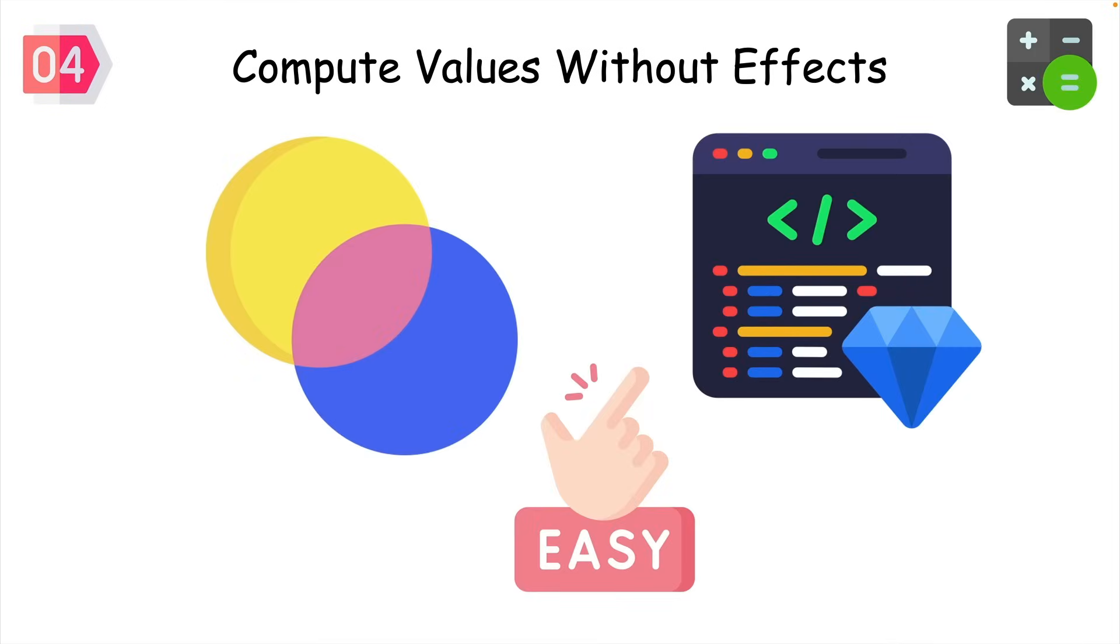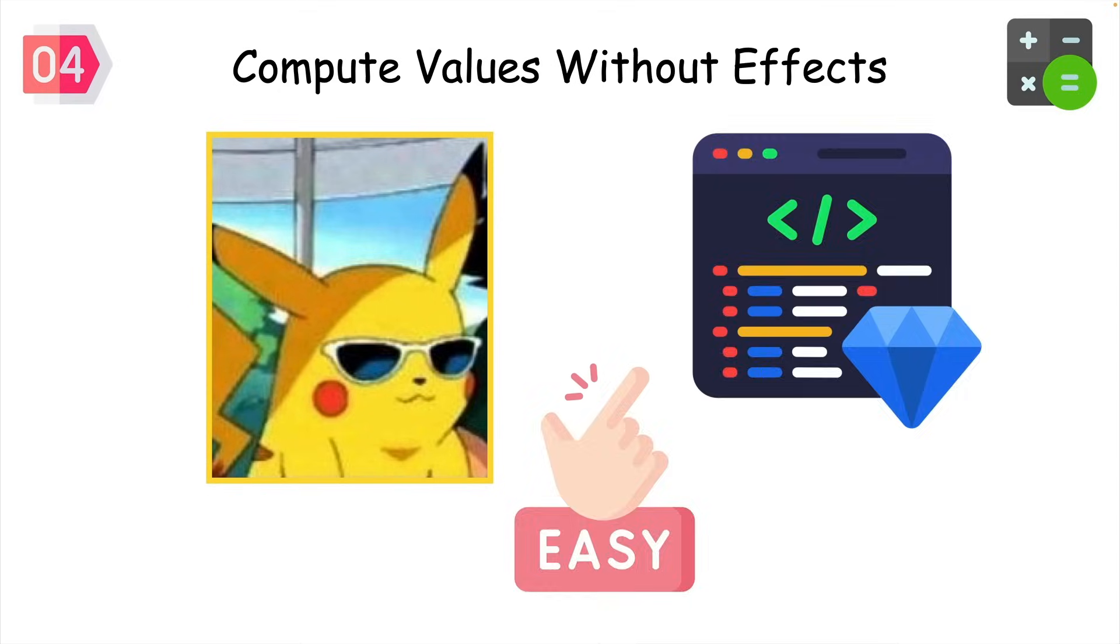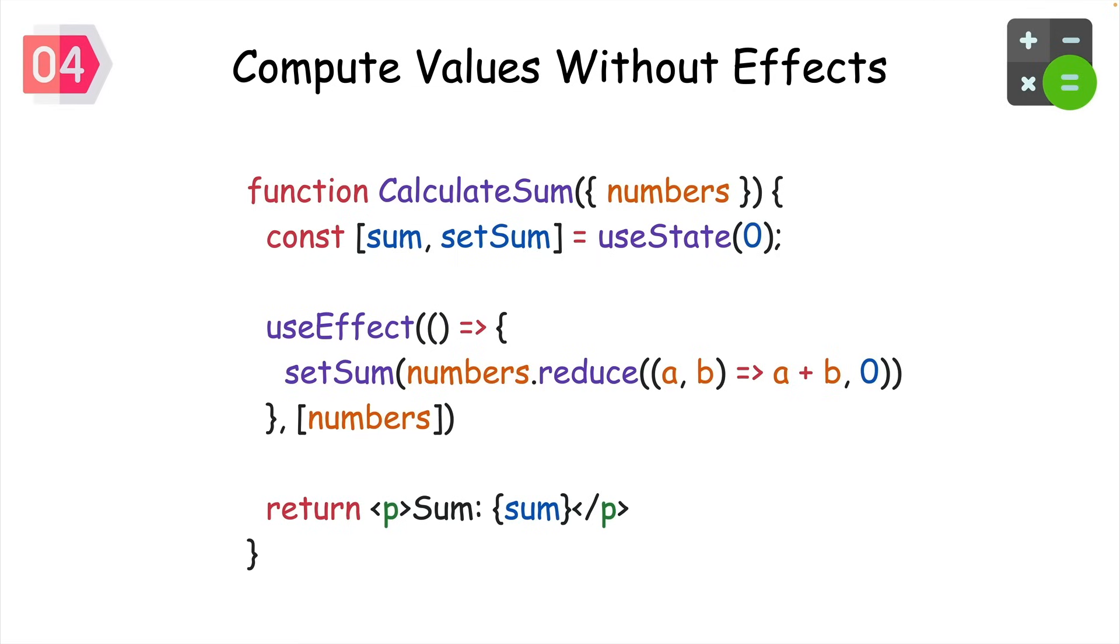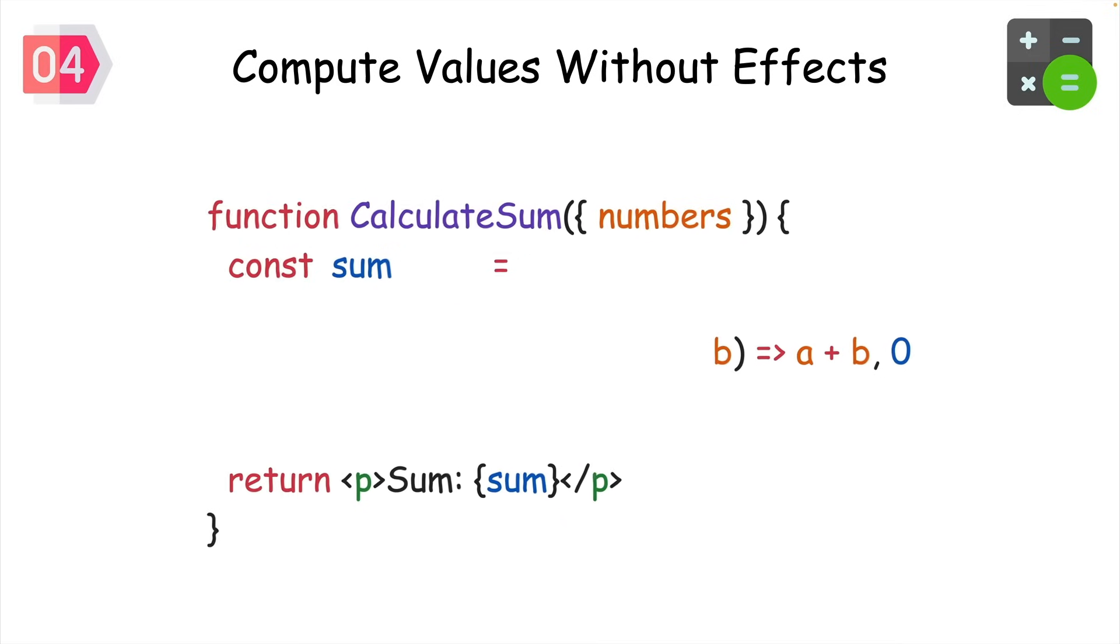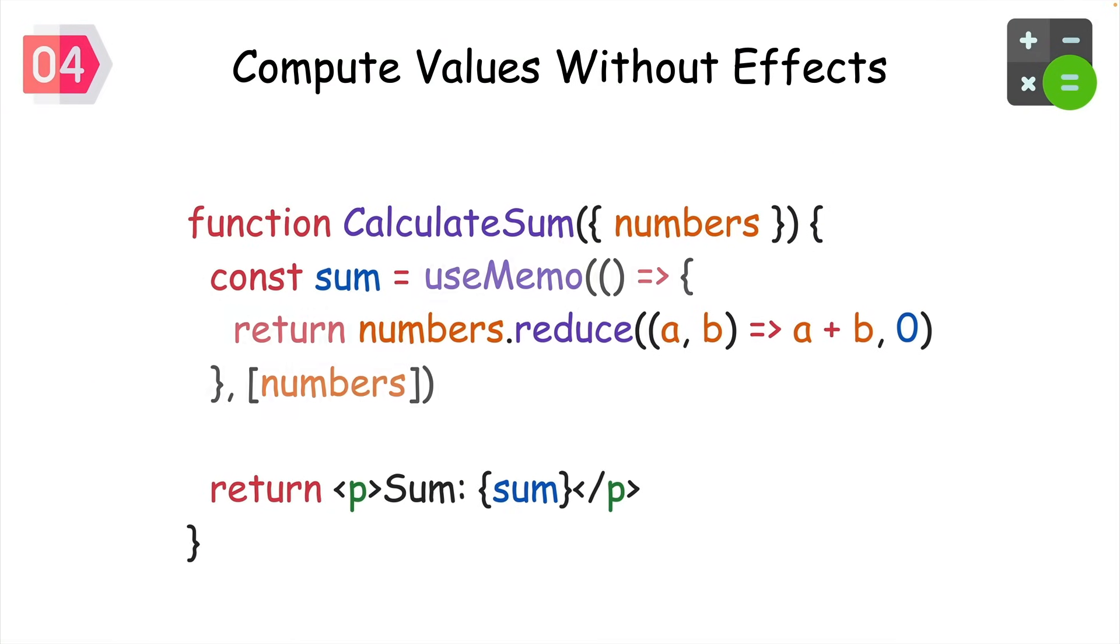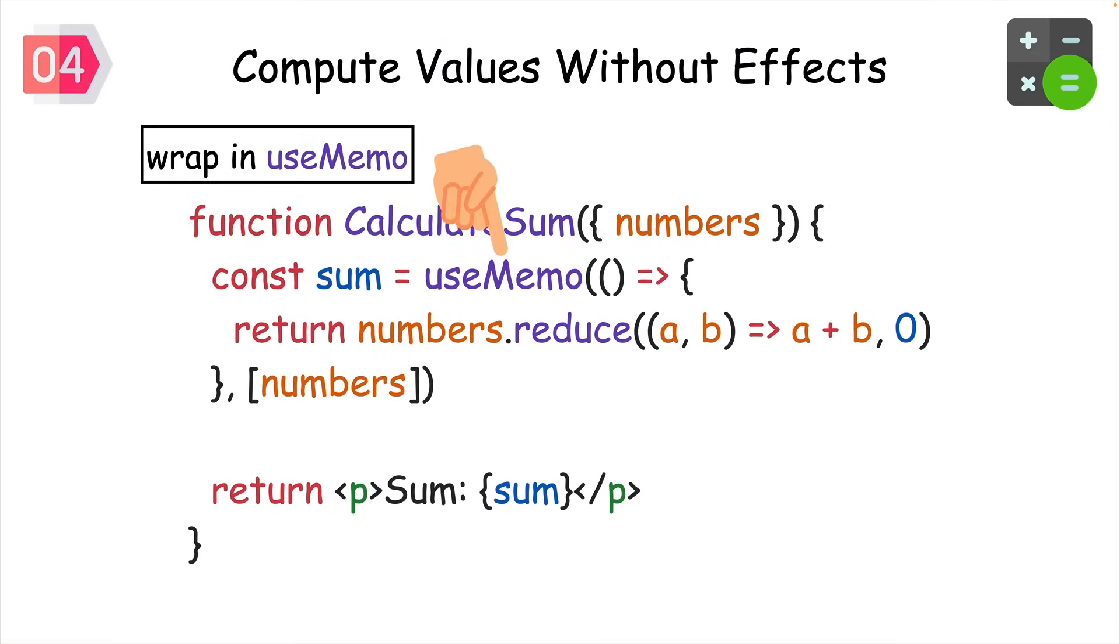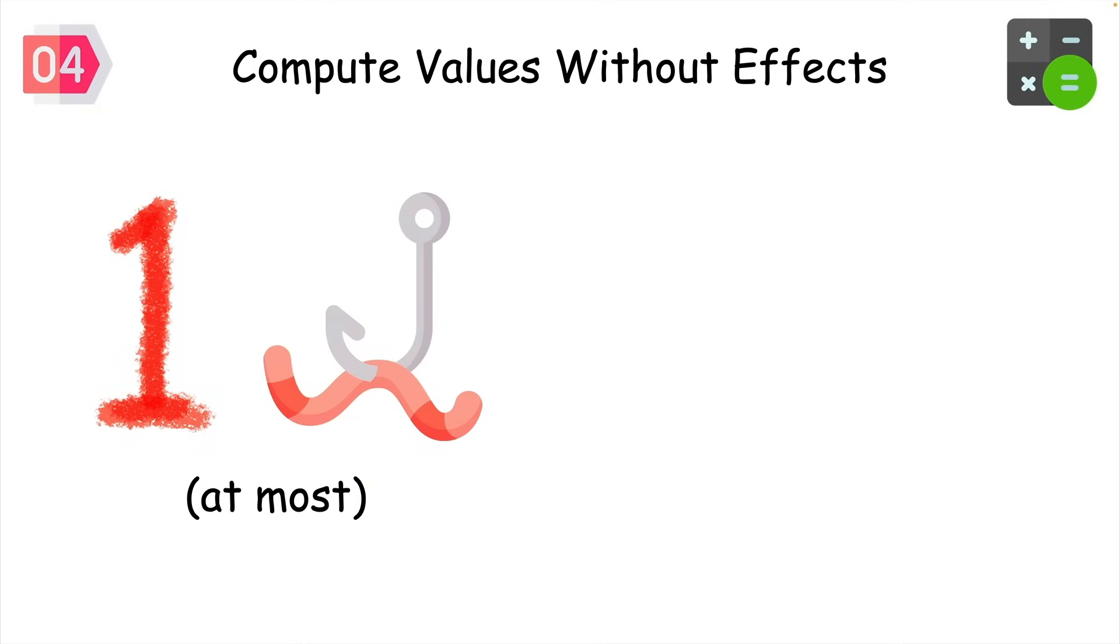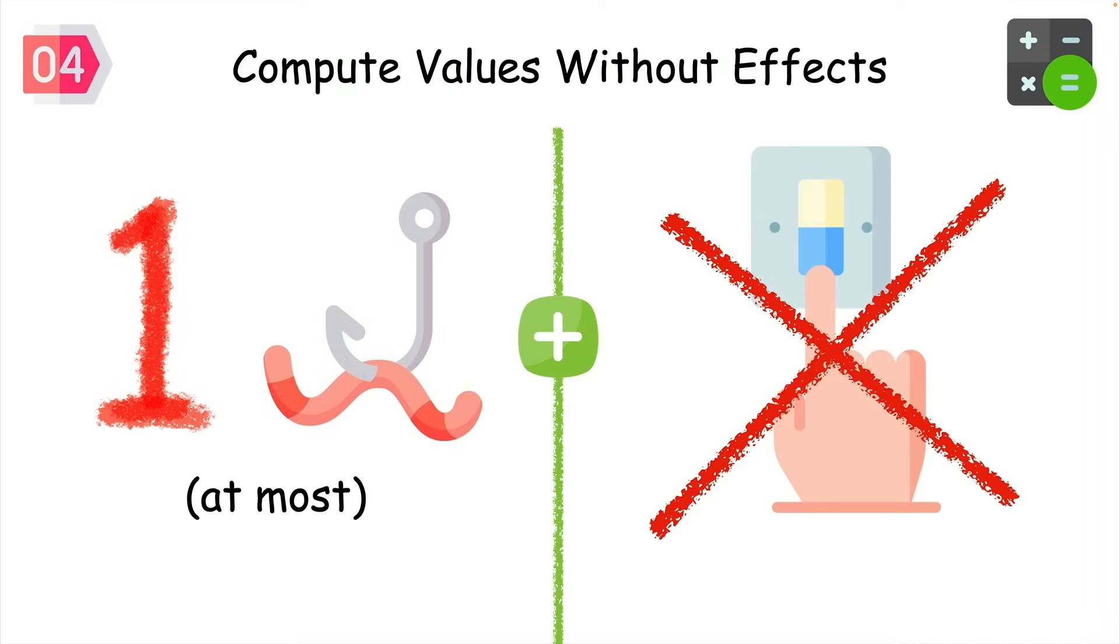Another very similar concept that will radically simplify your code is computable values. You might be computing some value within useEffect based off of state or props, but if that computation doesn't require an actual side effect, like a network request, you don't need useEffect at all. Like derived values, just perform your calculation directly inside your component. If it's an expensive calculation, you can always wrap it in useMemo to recompute it only when its dependencies change. At most, you're only using one hook, and you have one less state variable to think about.